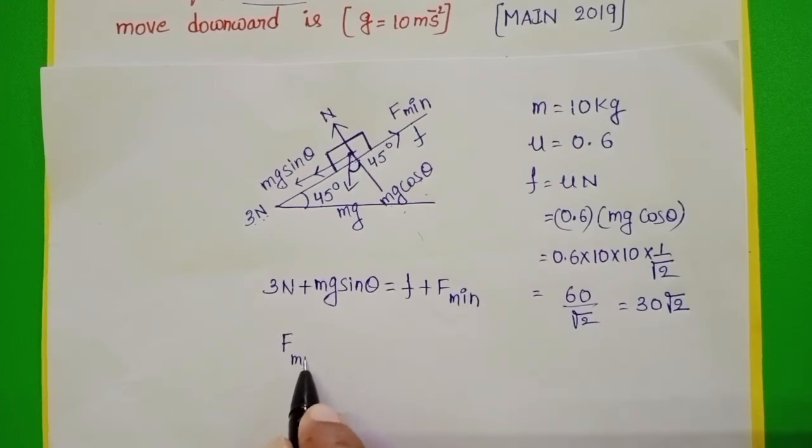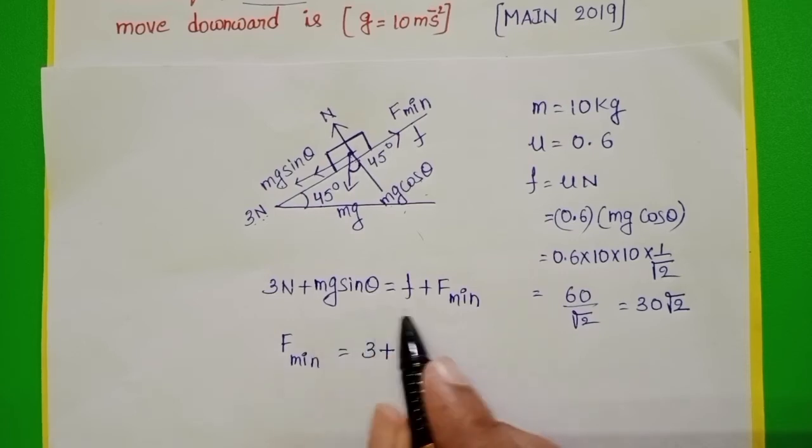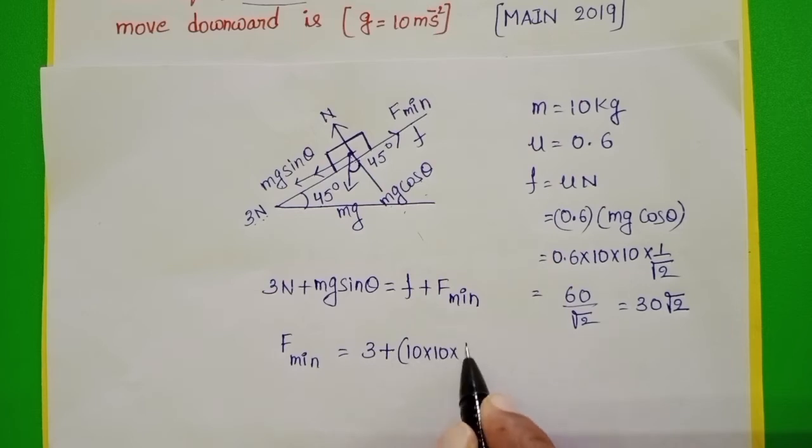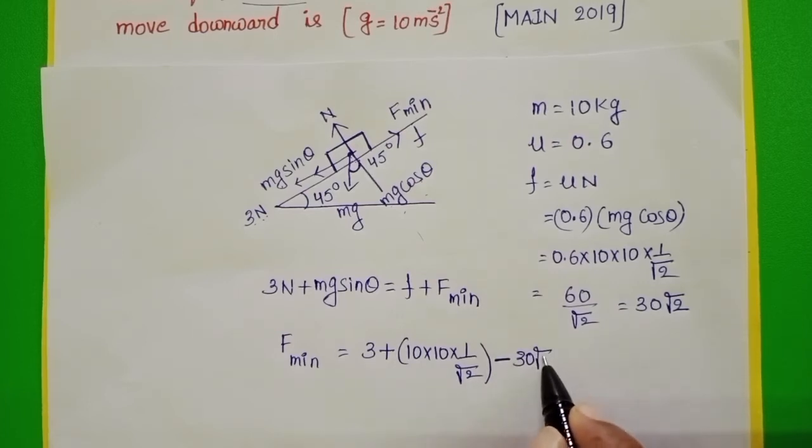Then F minimum is equals to 3 plus in place of Mg sin theta 10 into 10 into sin 45, 1 by root 2, minus frictional force. So minus 30 root 2.